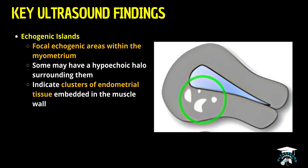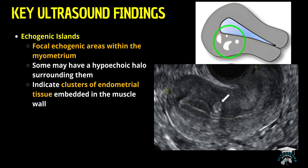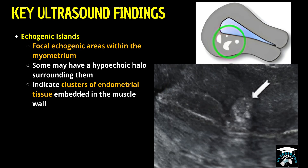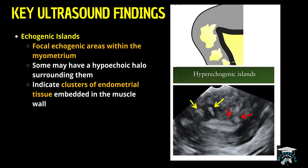Sometimes you'll also see echogenic islands, which are focal echogenic areas within the myometrium. Some of these islands may have a hypoechoic halo surrounding them. These indicate clusters of endometrial tissue embedded in the muscle wall.